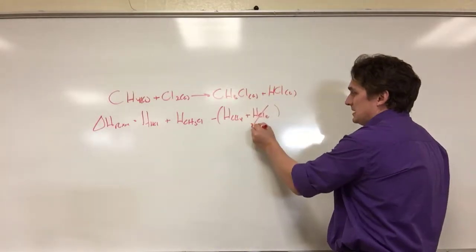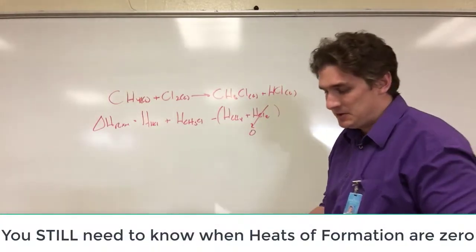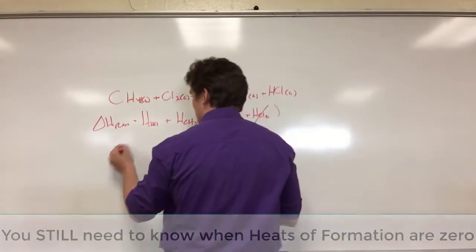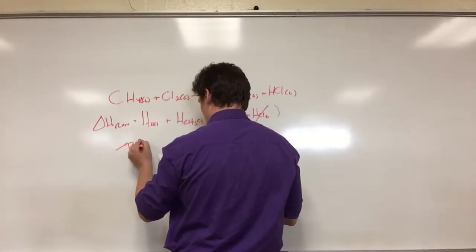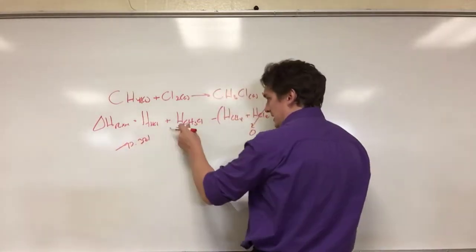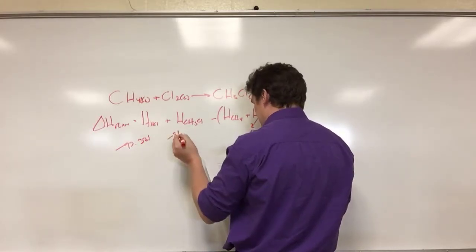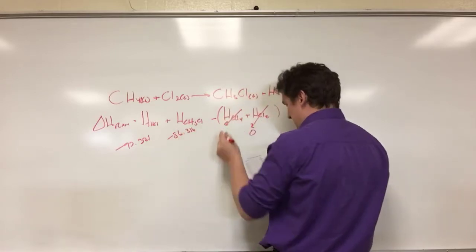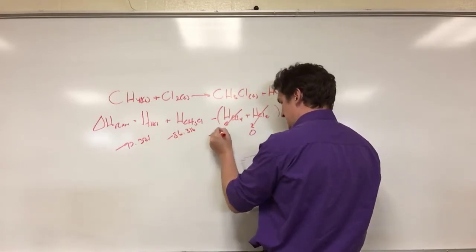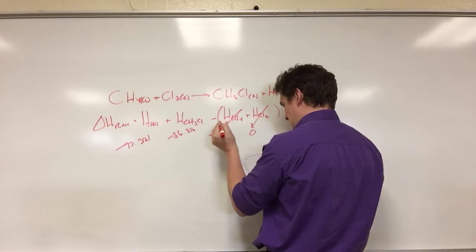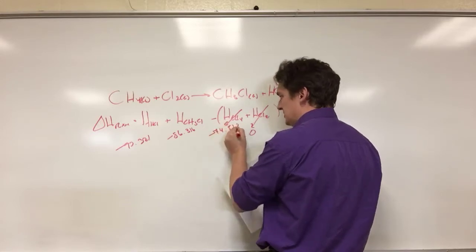So this ends up canceling out. What's the heat of formation of HCl? If we go to NIST-JANAF, this is minus 92.312 kilojoules per mole. The heat of formation of CH3Cl is minus 86.316, and the heat of formation of CH4 is minus 74.873.